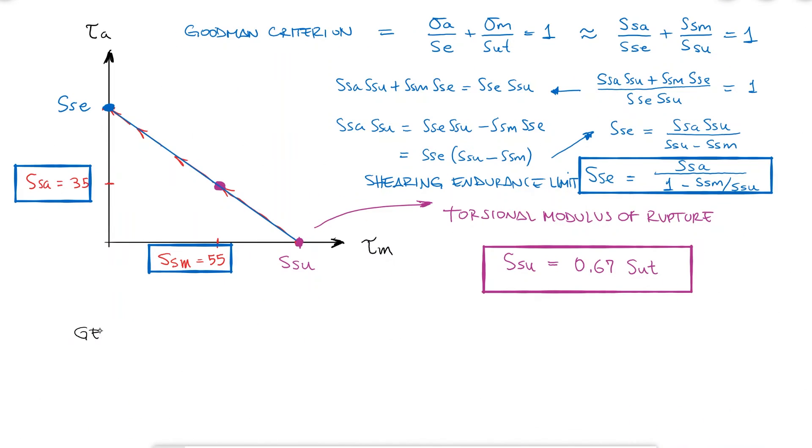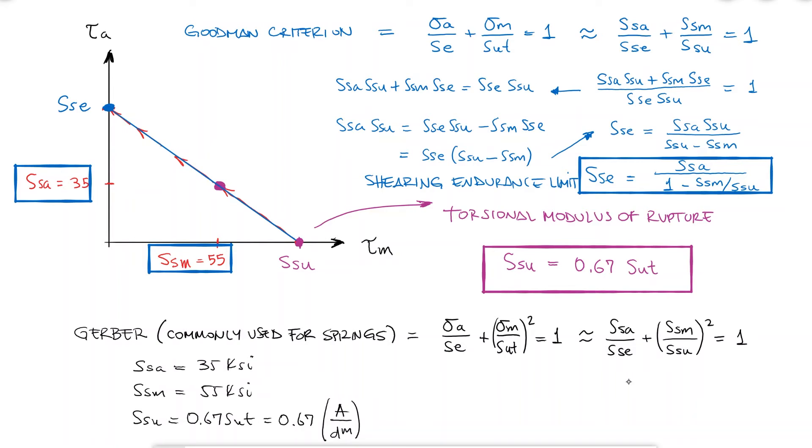For example, the most commonly used criterion for springs is Gerber. If we know that SSA and SSM have the same values because they're always the same, and we estimate SSU for any given material, we can project the curve up to the y-axis by solving for SSE from the Gerber equation. This means that the SSA and SSM Zimmerli values are only used to find SSE.